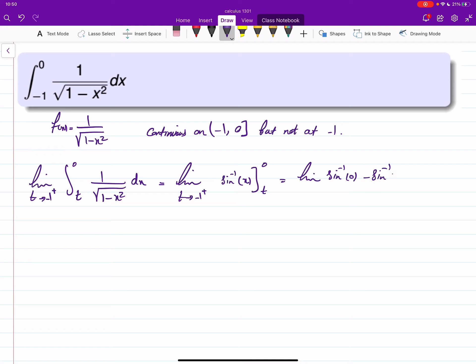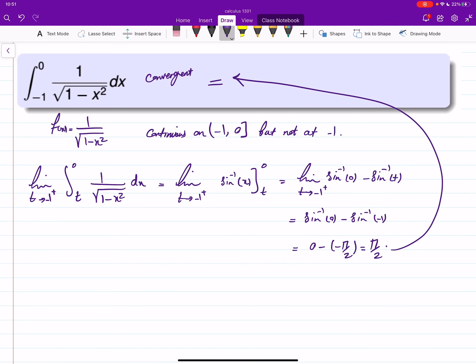Minus sine inverse of t as t goes to negative one from the right. But we know that sine inverse in the defined domain is continuous, so that means this will be sine inverse of 0 minus sine inverse of negative one. And sine inverse of negative one is negative π/2, so 0 minus negative π/2, which is just π/2. So the integral is convergent, and its value is given by whatever we found down there.